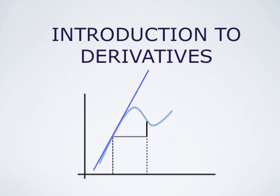Hello everybody, this is Mika Seppele. This video is a very gentle and short introduction to the concept of derivatives. Consider the problem of finding the equation of a line tangent to the graph of a given function at a given point. Such a tangent line has one point in common with the graph of the function — that is the point of tangency — and near that point it approximates the graph of the function very well, like the blue tangent line shown here in this picture. In order to determine the equation of this blue tangent line, we have to start by considering secant lines like this red secant line here. And that leads to the concept of derivatives.